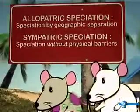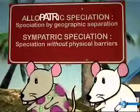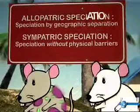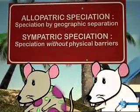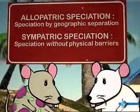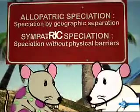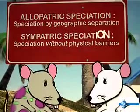Speciation by geographic separation is called allopatric speciation, while speciation that occurs without physical barriers is called sympatric speciation.